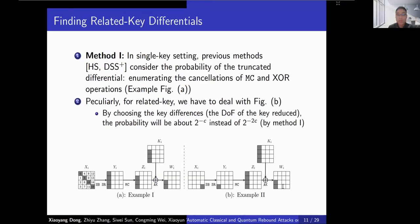To find a good related-key differential, we first consider previous tools in the single-key setting. In Example 1, by enumerating the cancellations of MC and AK, we can estimate the probability. However, we have different situations for the related-key setting. In Figure B, when only enumerating cancellations, the probability is a certain value. However, there is only one active S-box. We can choose a valid differential from X_i to Y_i by accessing the DDT of the S-box, and then choose a key to cancel the two-cell difference in W_i. The total probability of the trail will be around 2^c larger than before. So, by consuming degrees of freedom from the key, the probability of the differential may increase.